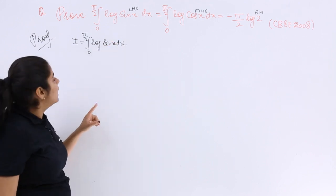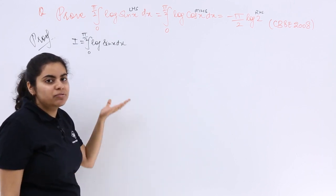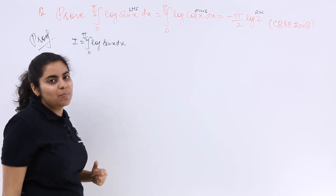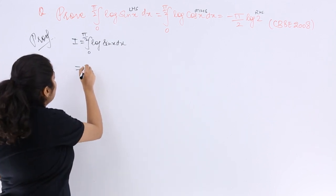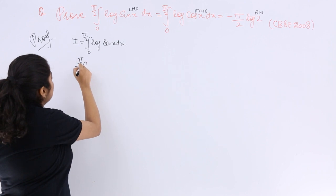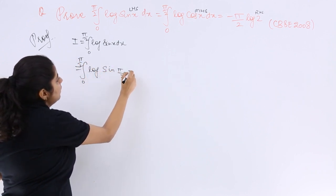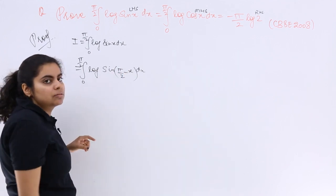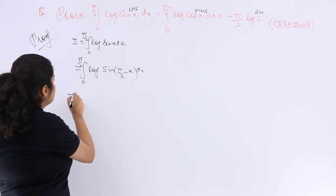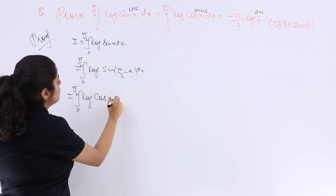Then 0 to π/2 goes the limits. I know that if 0 to a goes the limits for f(x) dx, I can substitute it by 0 to a limits f(a-x) dx, so I can write 0 to π/2 log sin(π/2 - x) dx, a minus x, right? You have to write that property over there.